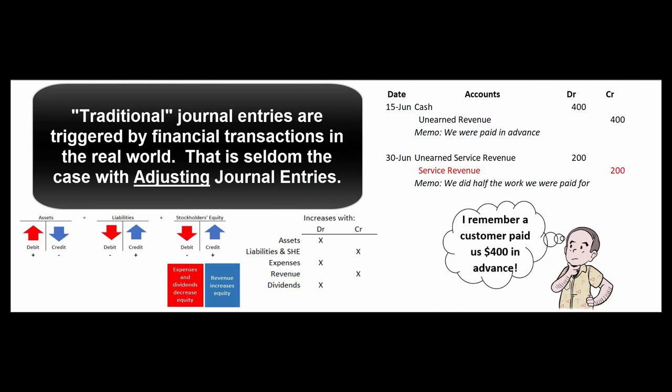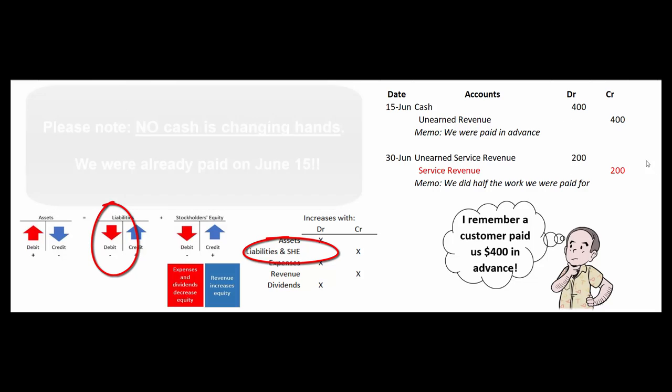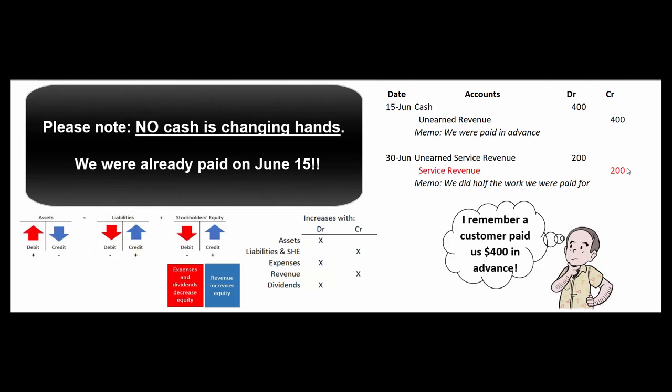June 30th comes around and we want to get all our expenses and all our revenue into the correct periods. So hopefully we remember to check with our workers and they tell us they've done half that work on that job. So we'll reduce unearned service revenue by $200 and we'll book service revenue of $200. We'll book half of that as revenue because we've satisfied the performance obligation. The account service revenue is a revenue account. If expenses are debits, the opposite, revenue, must be recorded with credits. You must remember this.